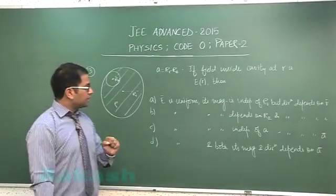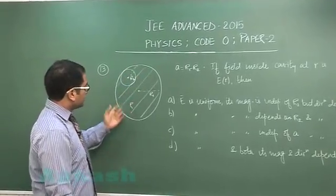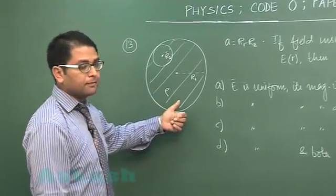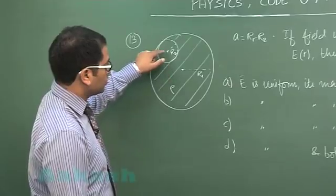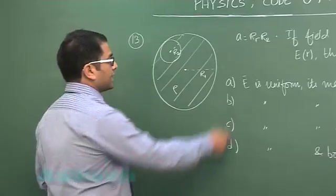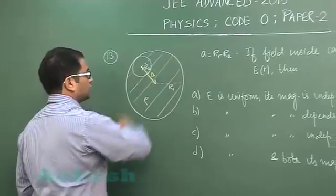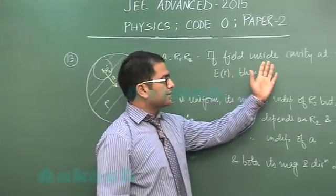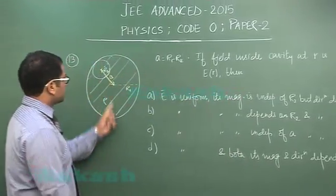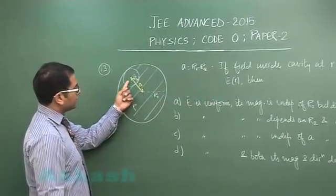Question number 13 is a quite famous question from electrostatics: a solid uniformly charged body of density ρ coulombs per meter cube, having a cavity of radius r₂ which is off-center from the main sphere, and a is r₁ minus r₂, where a is the distance separation between the two centers. The field inside the cavity at small r — where r is the distance from the center to any point in the cavity — is E as a function of r.